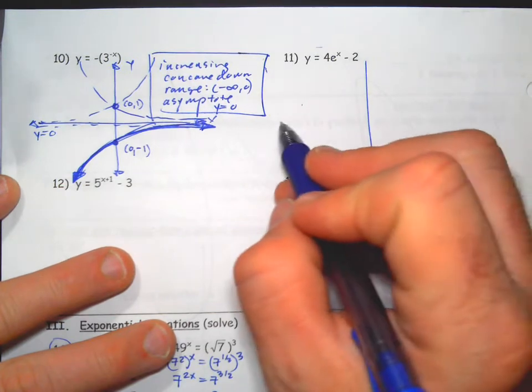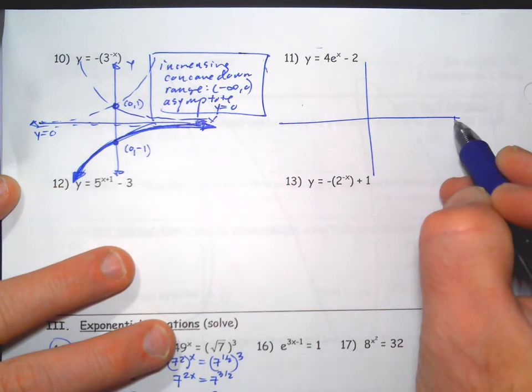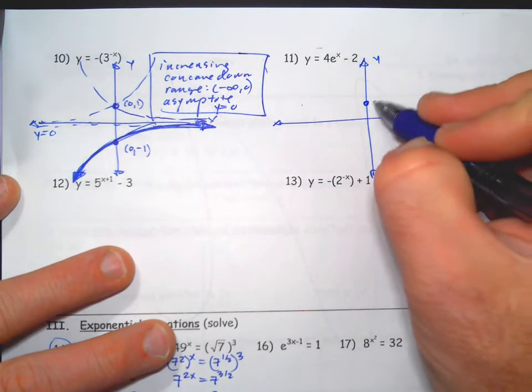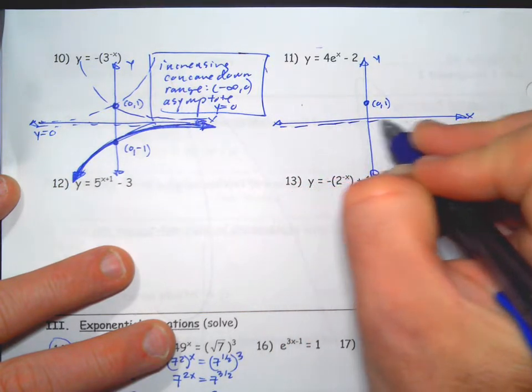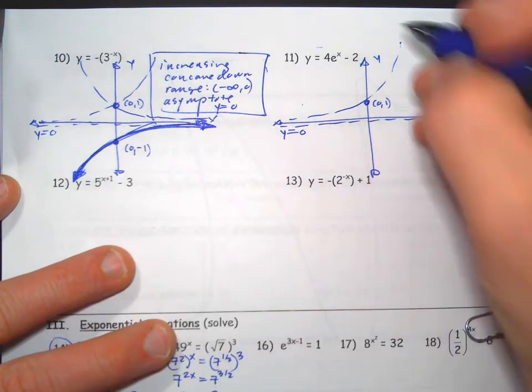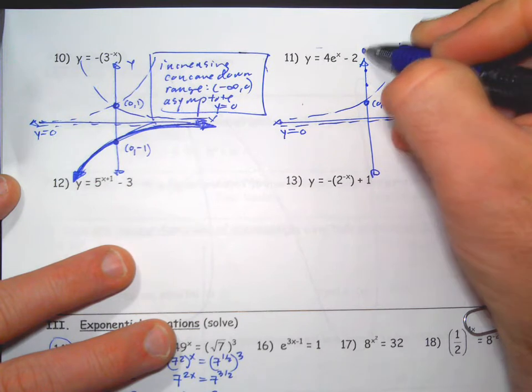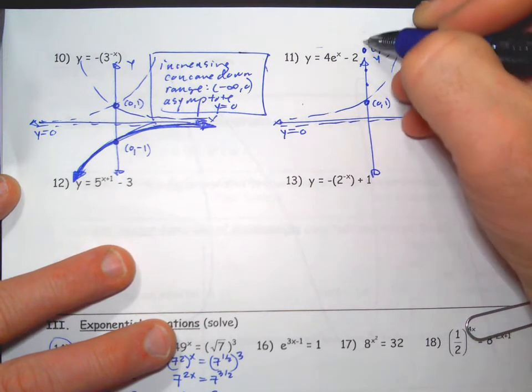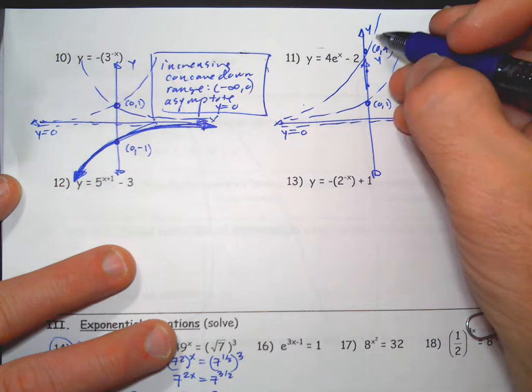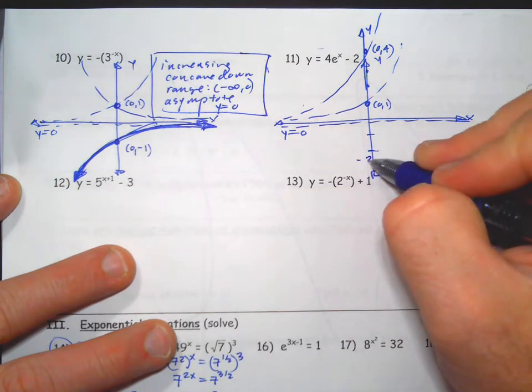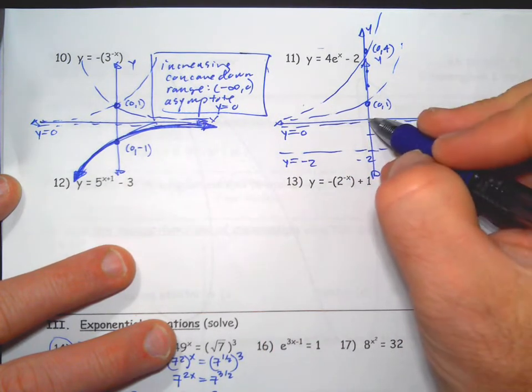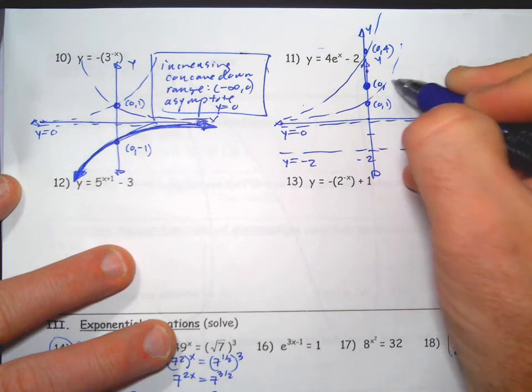Parent function. This is the one difference - that first graph we start with, it's a different shape. It's a parent function. The four multiplies all the y values by four, and the main one we're keeping track of is that y-intercept. Then the minus two moves everything down two.